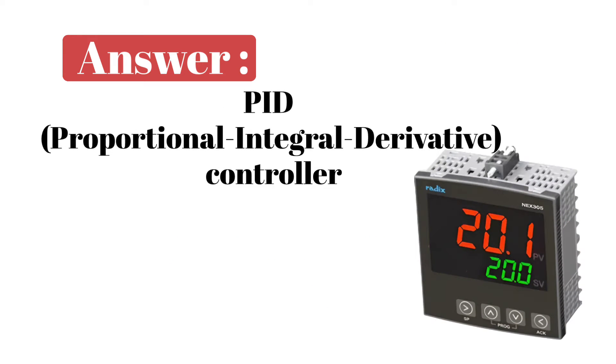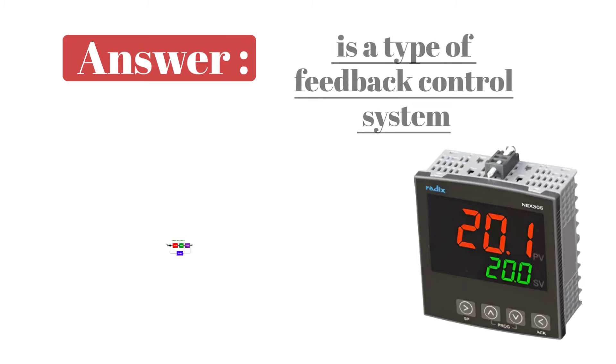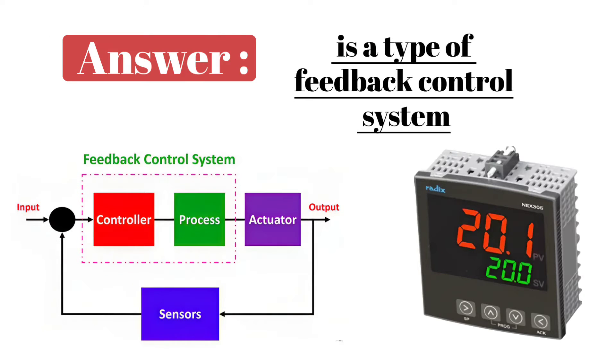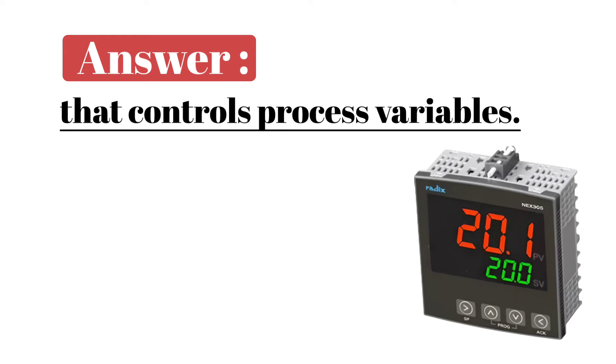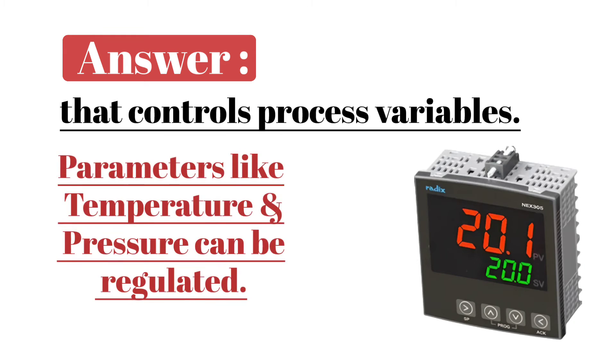PID, proportional integral derivative controller, is a type of feedback control system that controls process variables. With this, parameters like temperature and pressure can be regulated.